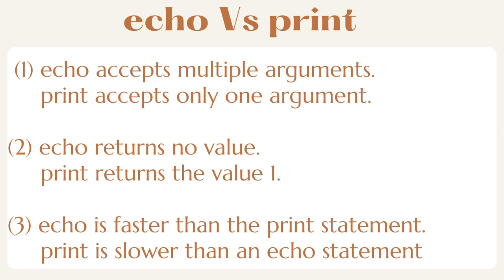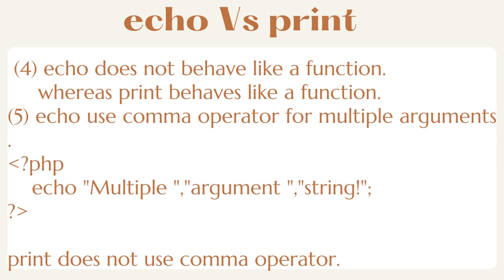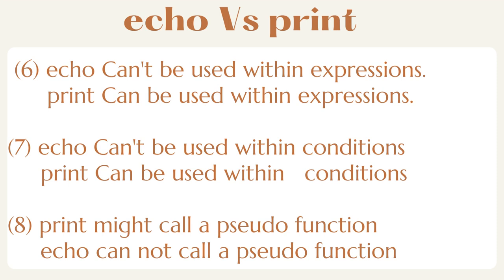Three: echo is faster than the print statement, while print is slower than echo. Four: echo does not behave like a function whereas print behaves like a function. Five: echo uses the comma operator for multiple arguments while print does not use a comma operator.